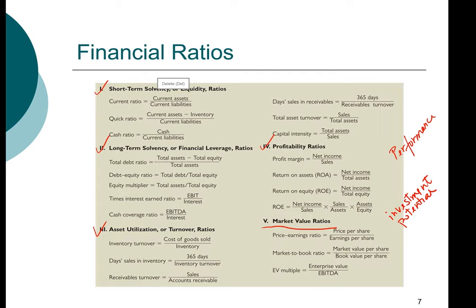The first of these ratios is the price-earnings ratio. Notice that for market value ratios, the first two ratios have all values stated on a per share basis. That's because as an investor, you're seldom buying the entire firm — you're more likely to be buying just 100 shares or 1,000 shares of a company, but not the entire company. So we need to convert those values into a per share basis.